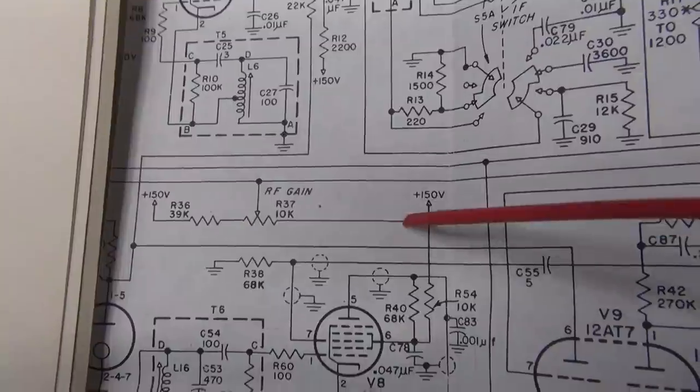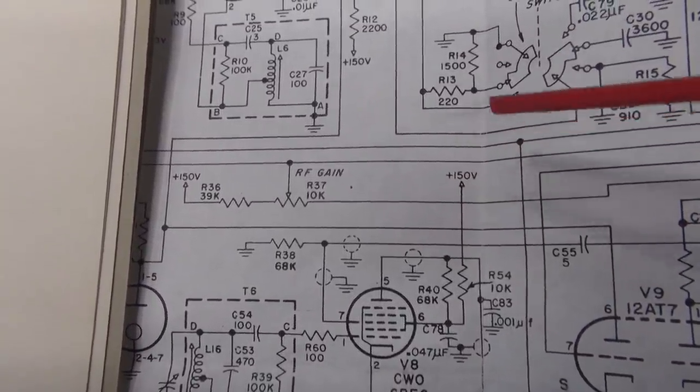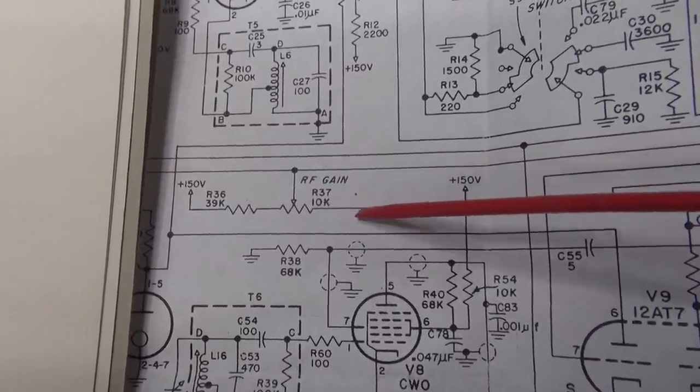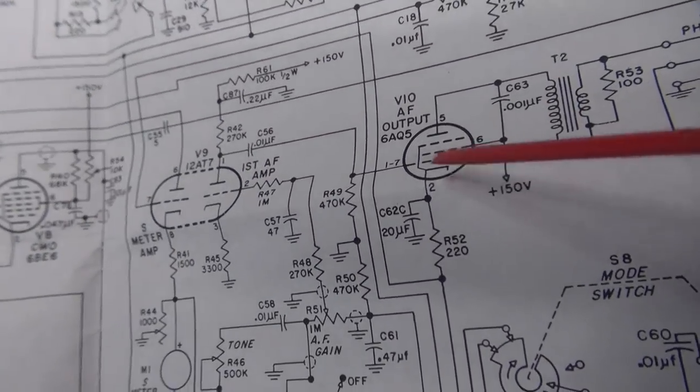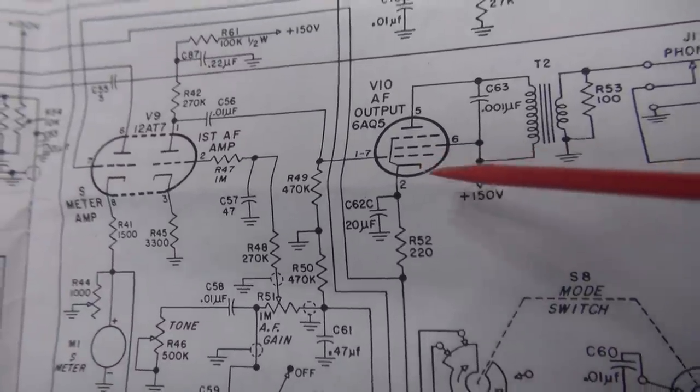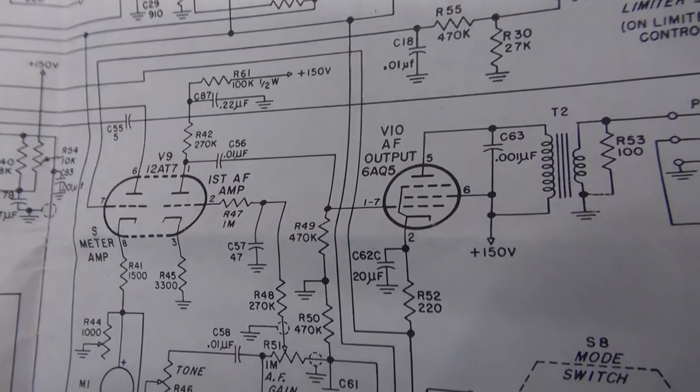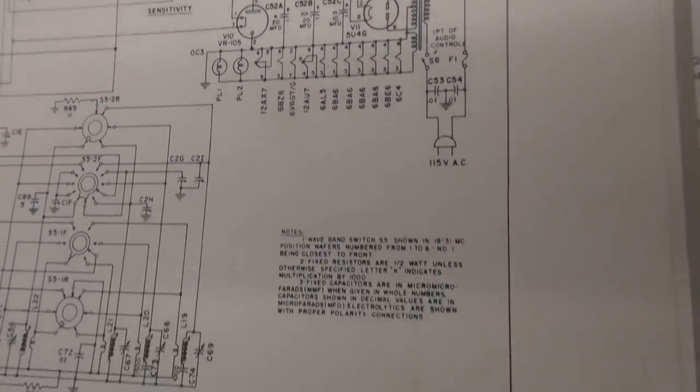This system, breaking the ground, is a seamless transmit-receive function. There's no popping. It simply removes the low side of the RF gain, and at the same time, removes the cathode ground from the 6AQ5 output tube. It's the best of both worlds, guys, and that is what I'm going to do to the HQ-150. Let's go.